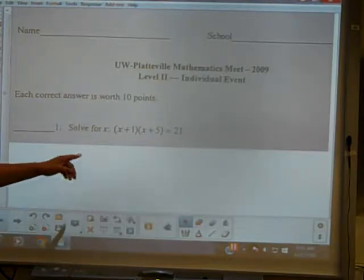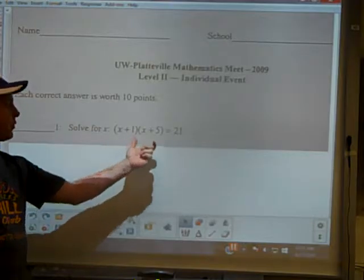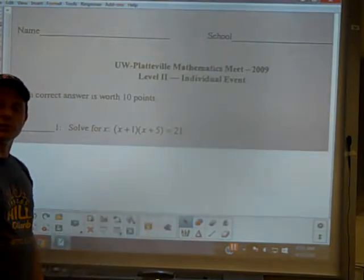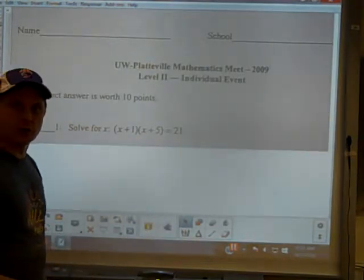It says solve for x and it gives the quantity x plus 1 times the quantity x plus 5 is equal to 21. If you want to pause and try, you can.